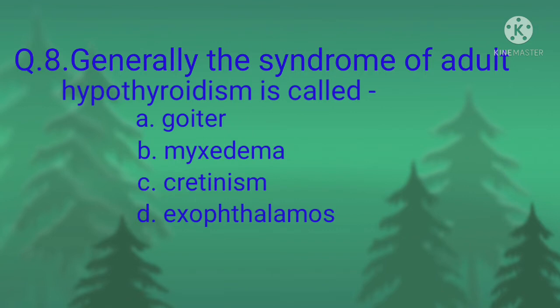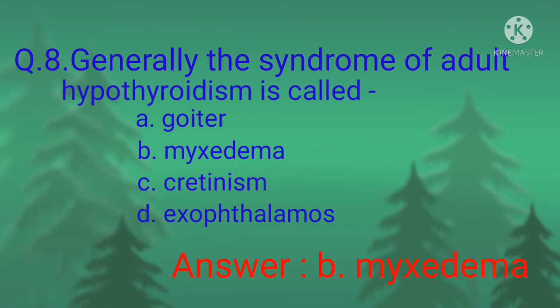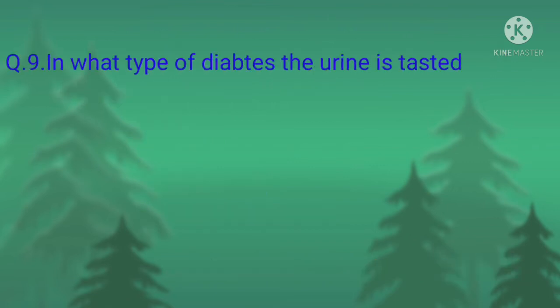Option A, goiter; option B, myxedema; option C, cretinism; option D, hypothalamus. The correct option is option B, myxedema. If a person suffers from myxedema, then mentation becomes slow with poor memory.